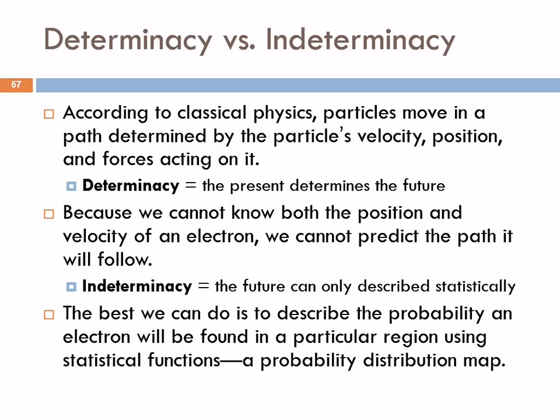In classical Newtonian physics, particles move in a path determined by their velocity, position, and the forces acting on them — that's called determinacy. The present determines the future. We understand this from everyday experience, like rolling a ball across the floor. That is not how extremely small particles act. Because we can't know the position and the velocity simultaneously, we can't predict the path. That's called indeterminacy.